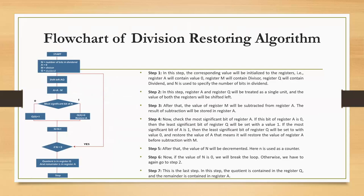Flowchart of the Division Restoring Algorithm. Step 1: In this step, the corresponding values will be initialized to the registers. Register A will contain value zero, Register M will contain the divisor, Register Q will contain the dividend, and N is used to specify the number of bits in the dividend.